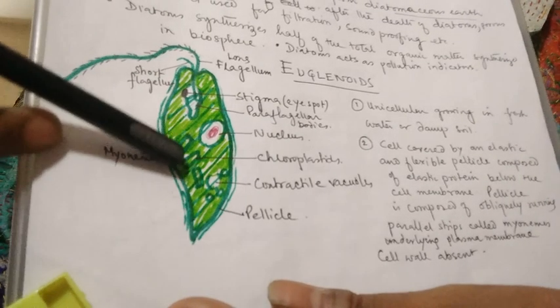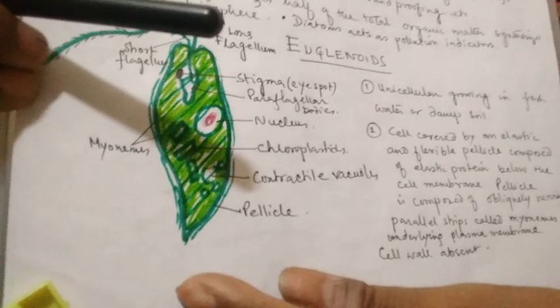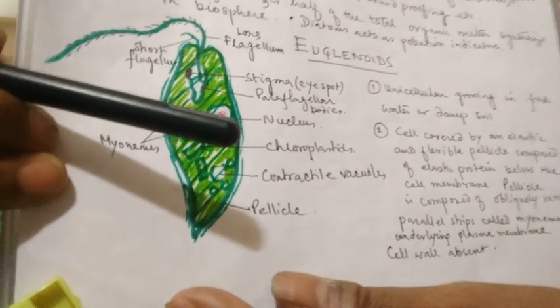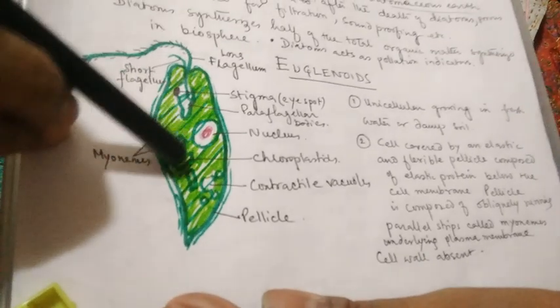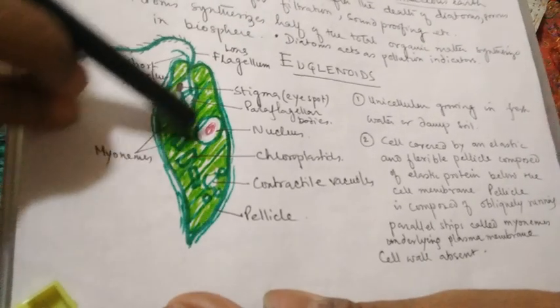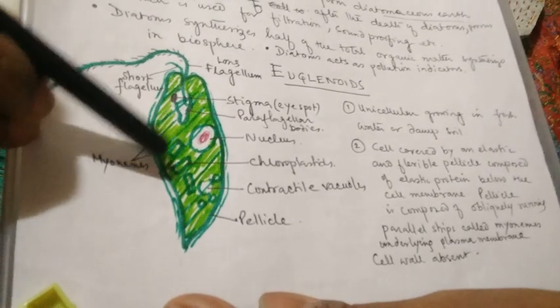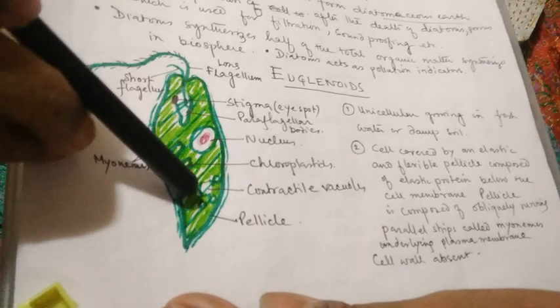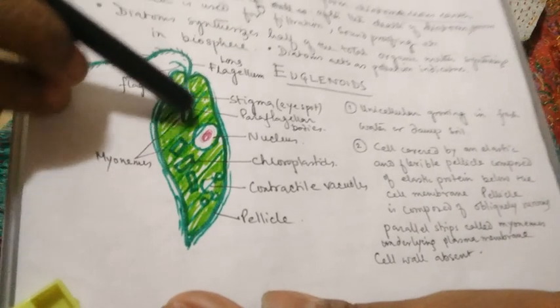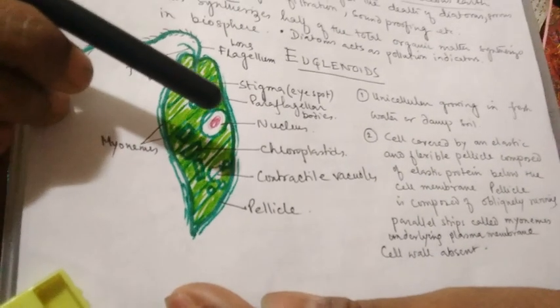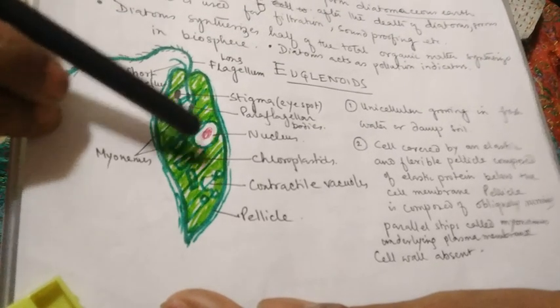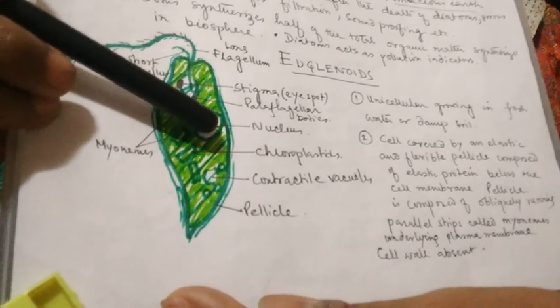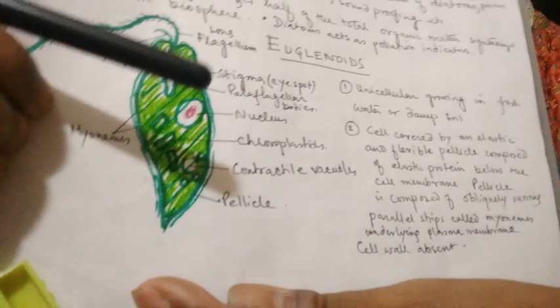The pellicle is nothing but an elastic protein, mainly composed of obliquely running parallel strips called myonemes. These pellicles are present underlying the cell membrane, and the cell wall is absent.